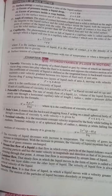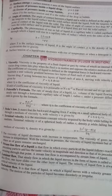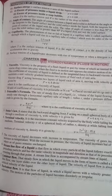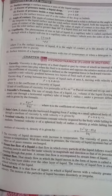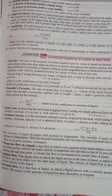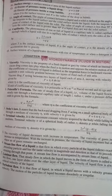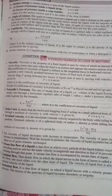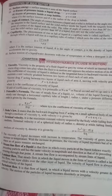In streamline flow, each particle of the liquid follows exactly the path of preceding particles and has the same velocity in magnitude. Turbulent flow is the flow of a liquid in which the liquid moves with greater velocity.